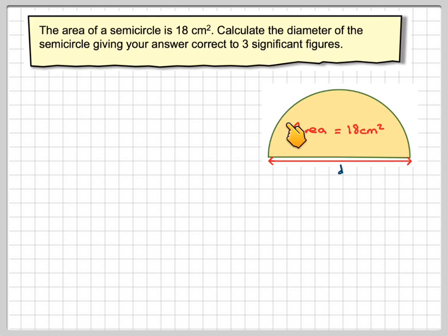Now one thing you should think of first is consider it to be a whole circle. So if it's a whole circle, then the area of the whole circle will obviously be 2 times 18, which is 36cm squared.